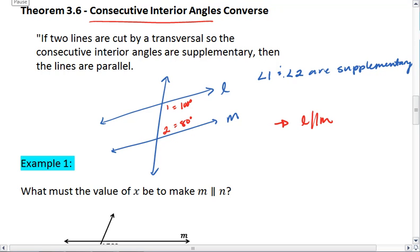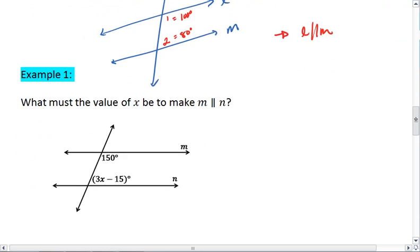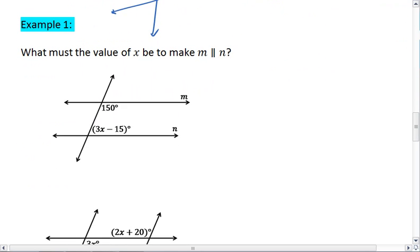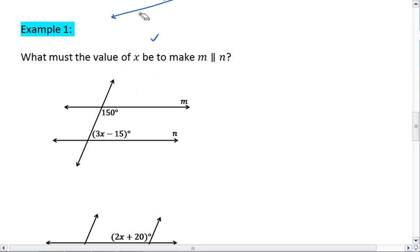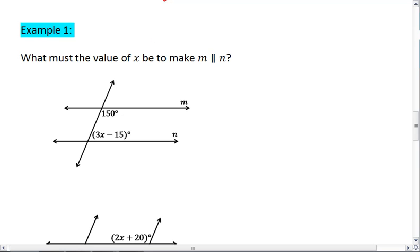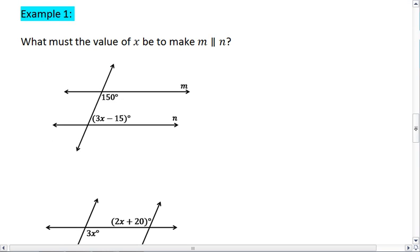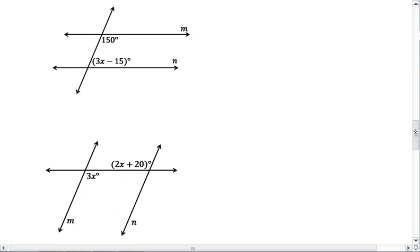Let's look at an example using this knowledge. In example 1, determine what the value of x must be to make m parallel to n. So you're given two diagrams here. You have to find the value of x that would make these two lines, m and n, parallel to one another. Go ahead and work this through, pause the video, and resume when you're ready to check your solution.